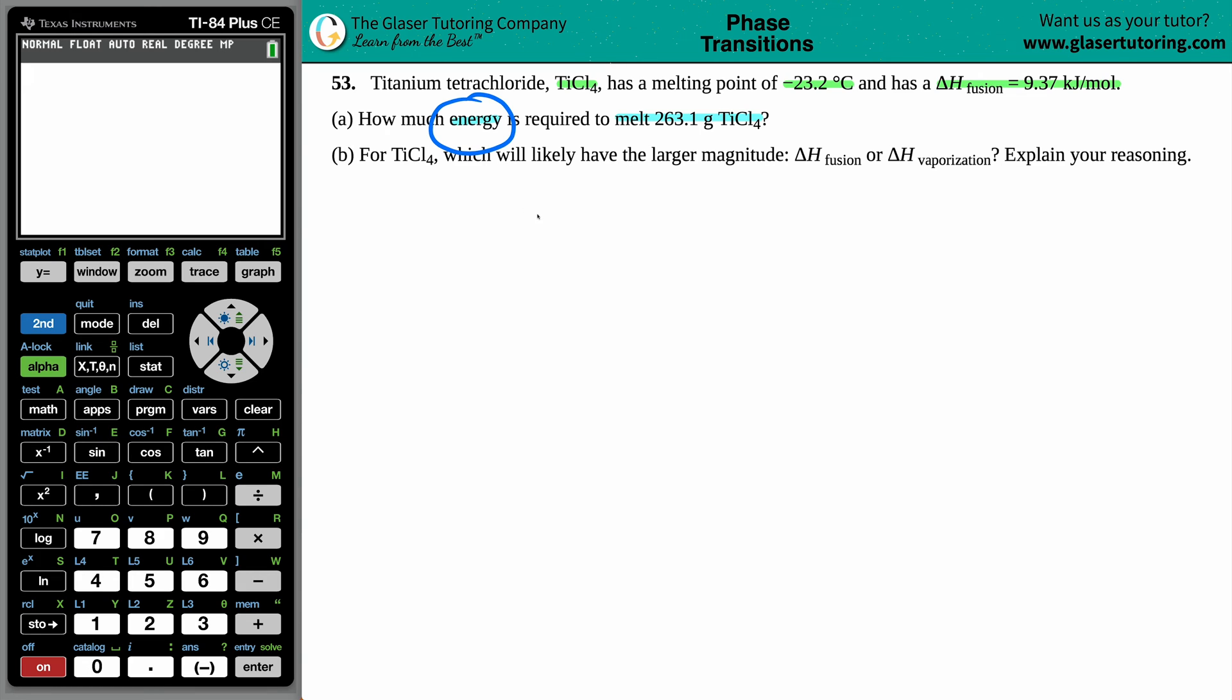Okay, so we're looking for how much energy is required to melt. So it seems that we're doing a phase change here. Melting is a phase change and melting is always going from a solid to a liquid. And if we are going from a solid to a liquid, we always need to have our delta H of fusion value. Fusion is a fancy way for saying melting.